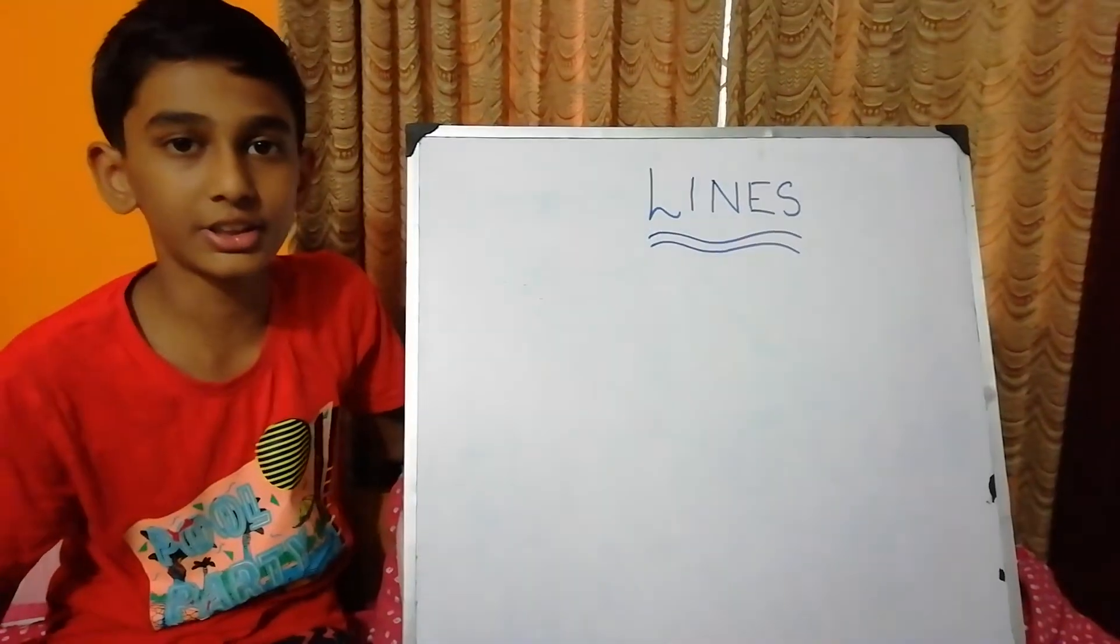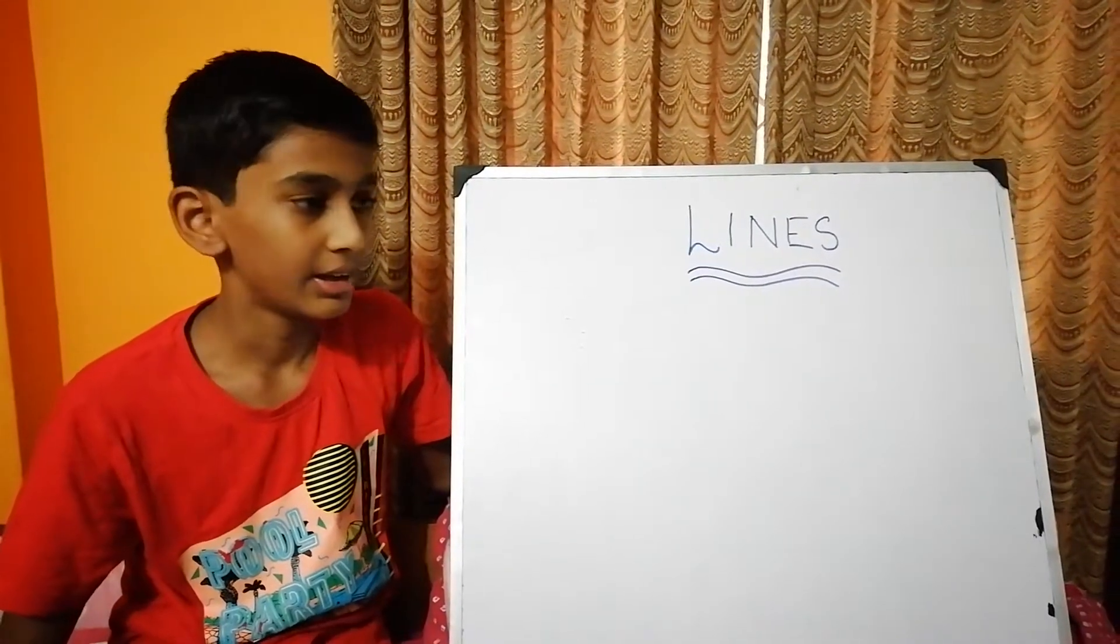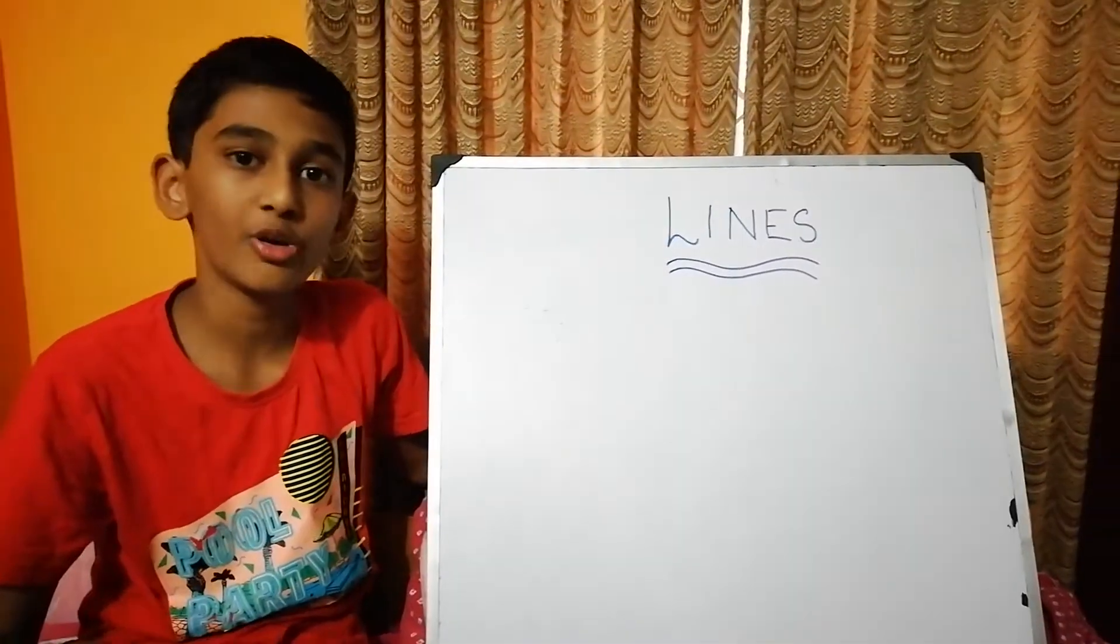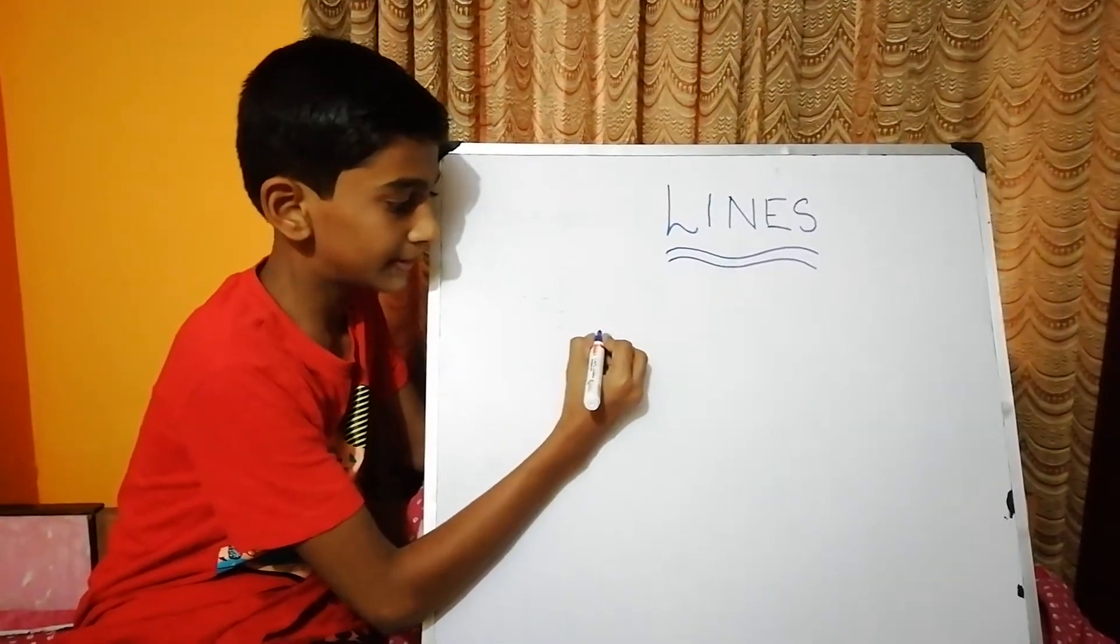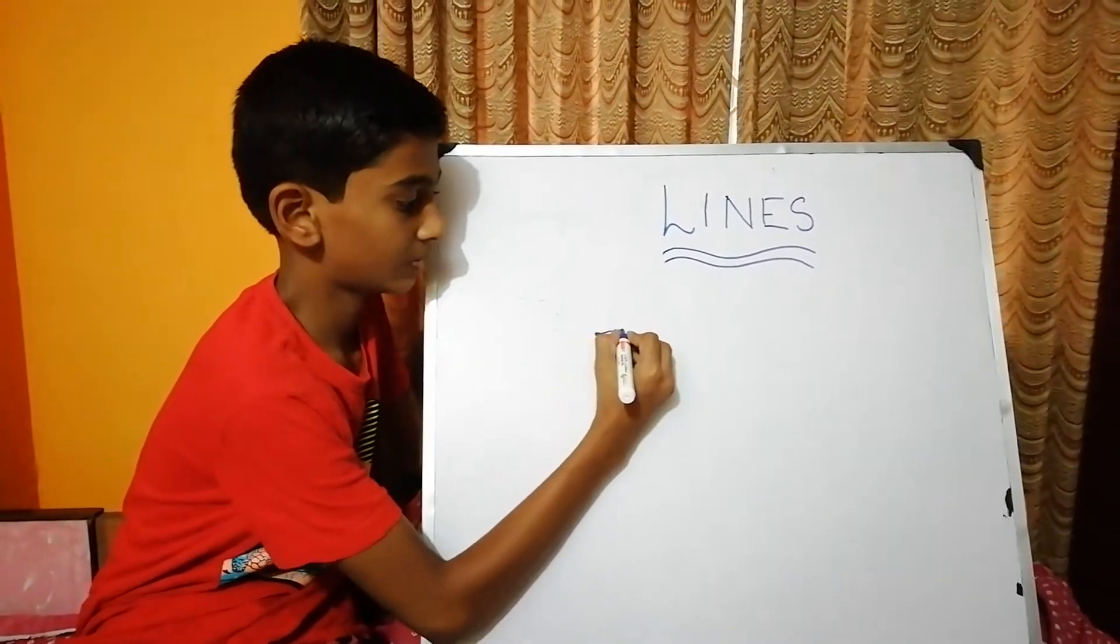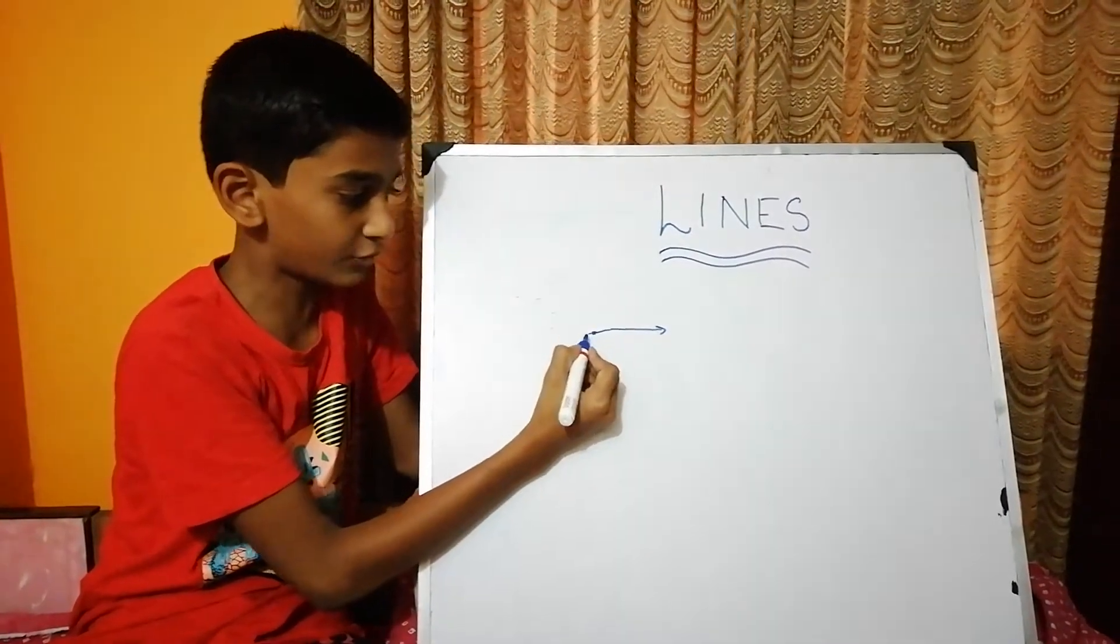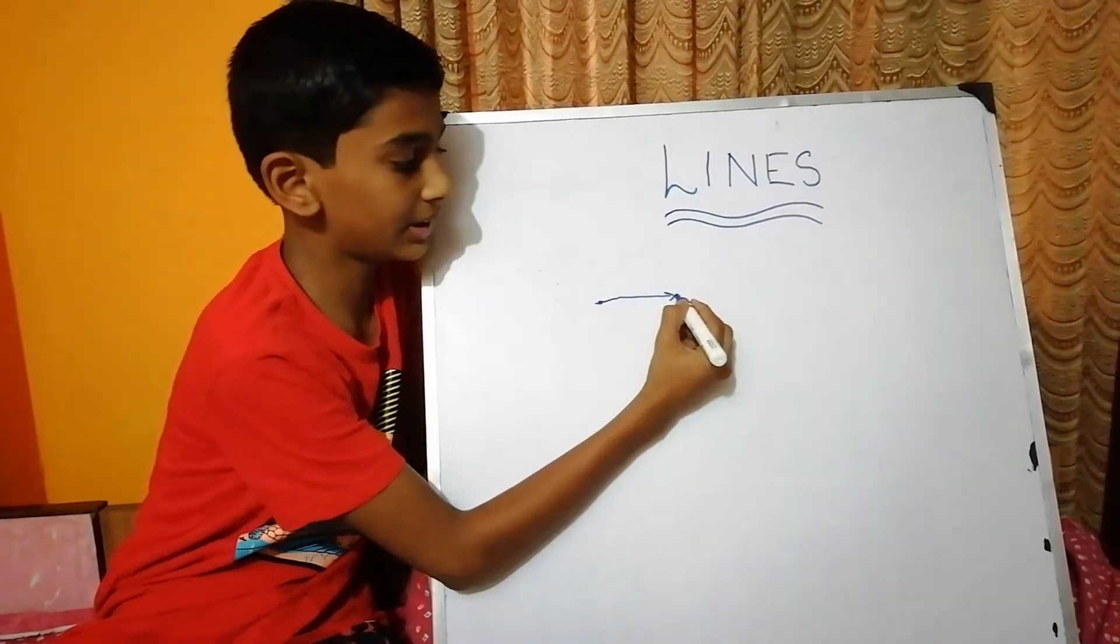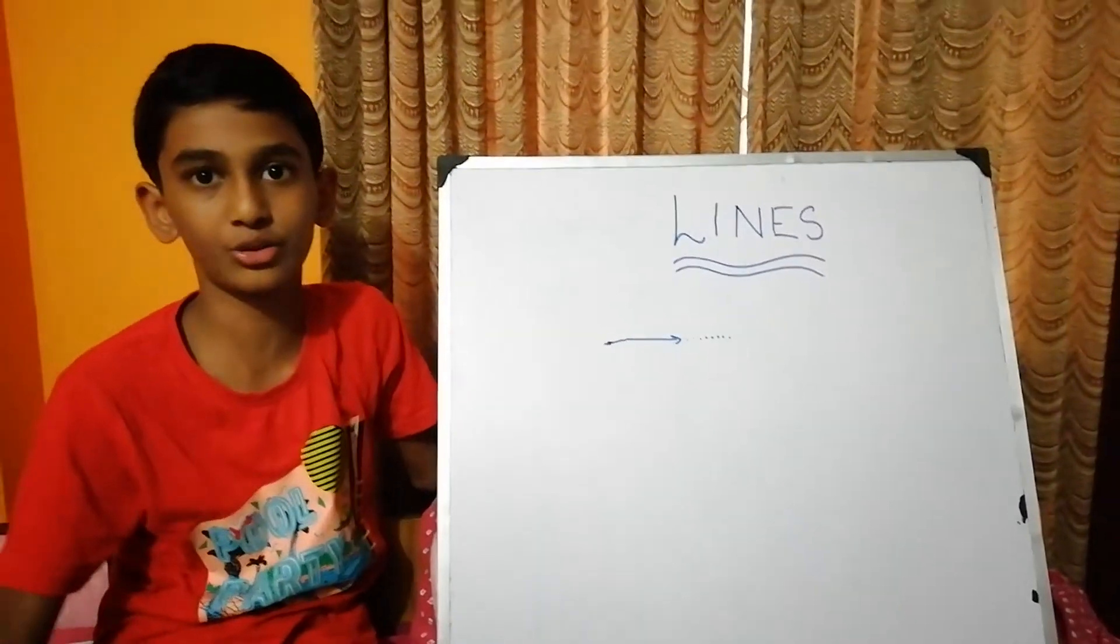The third type is ray. Ray is nothing but extended by only one direction. For example, in this direction of the ray, there is a stop. But in this direction, it goes on. There is no end to it.